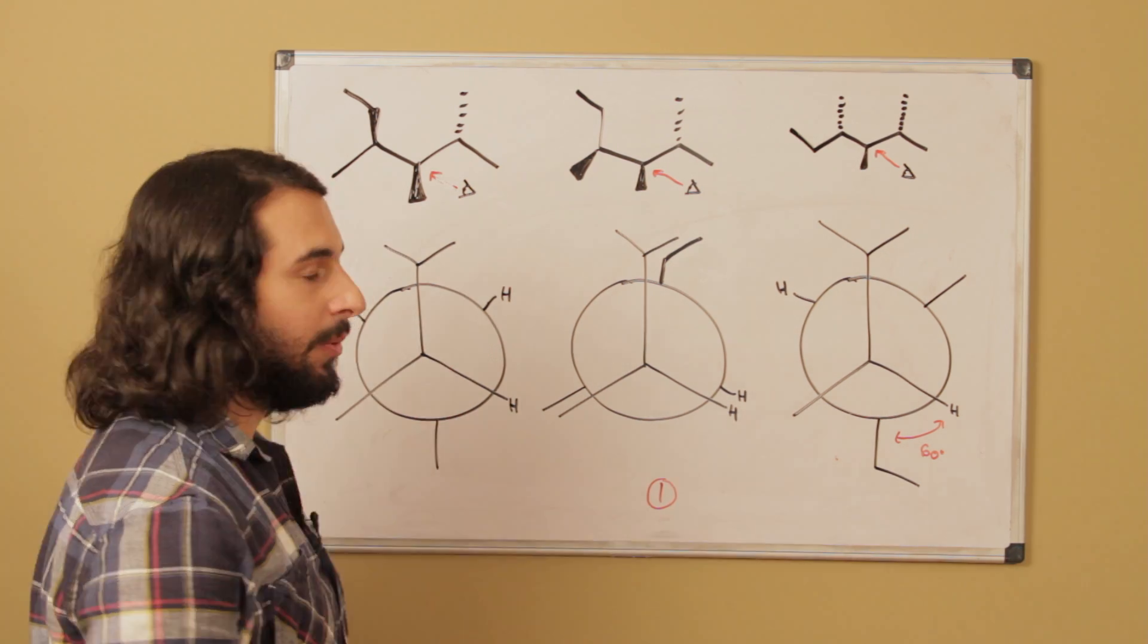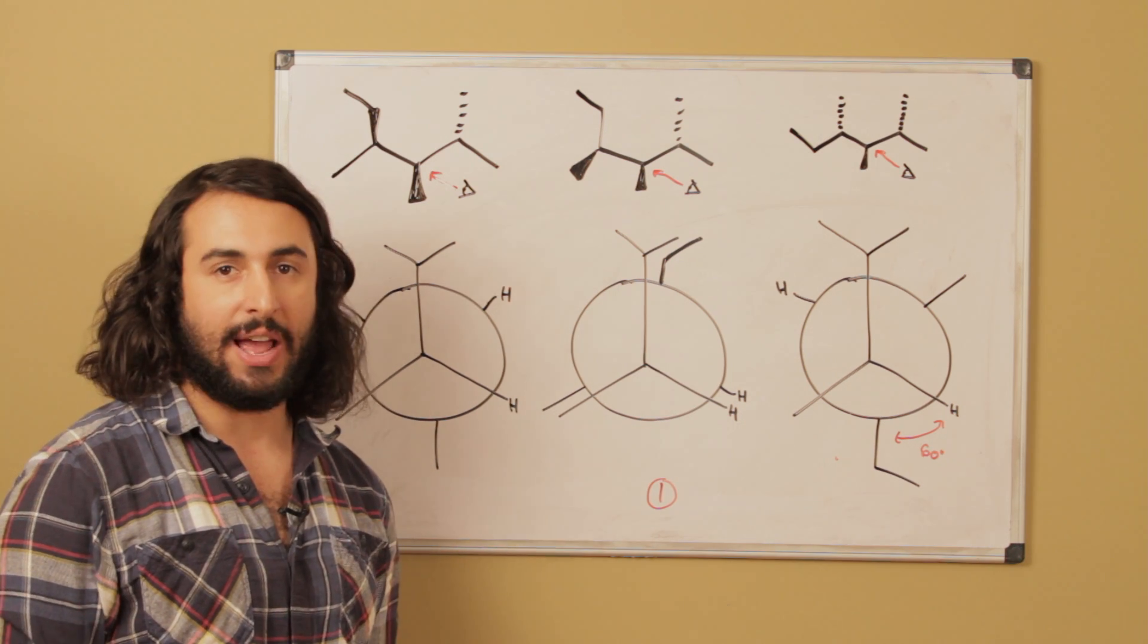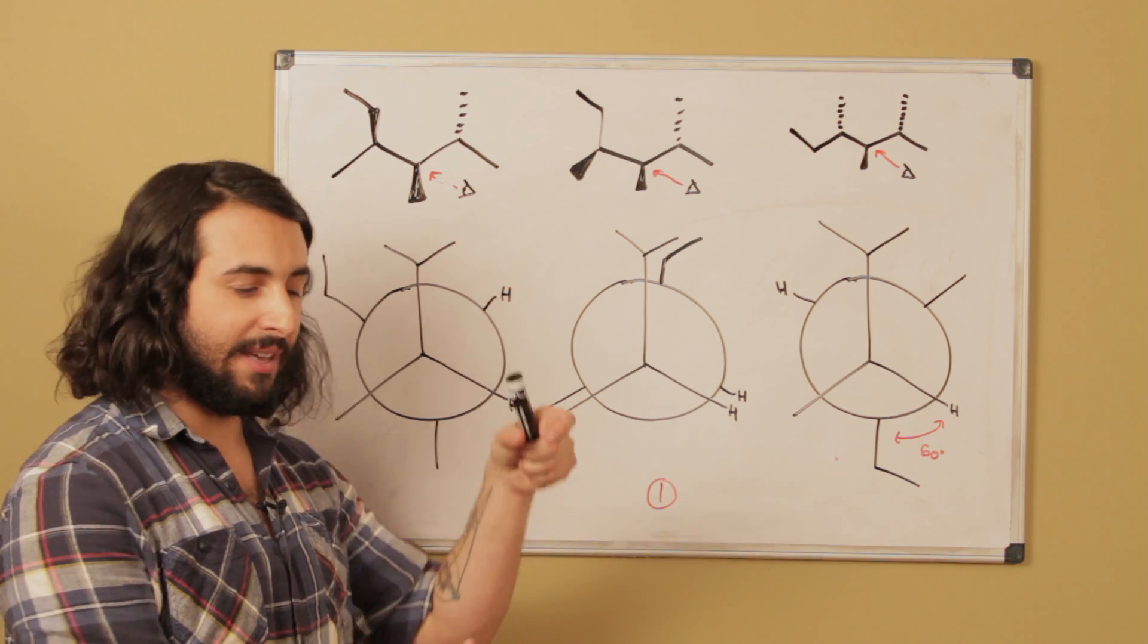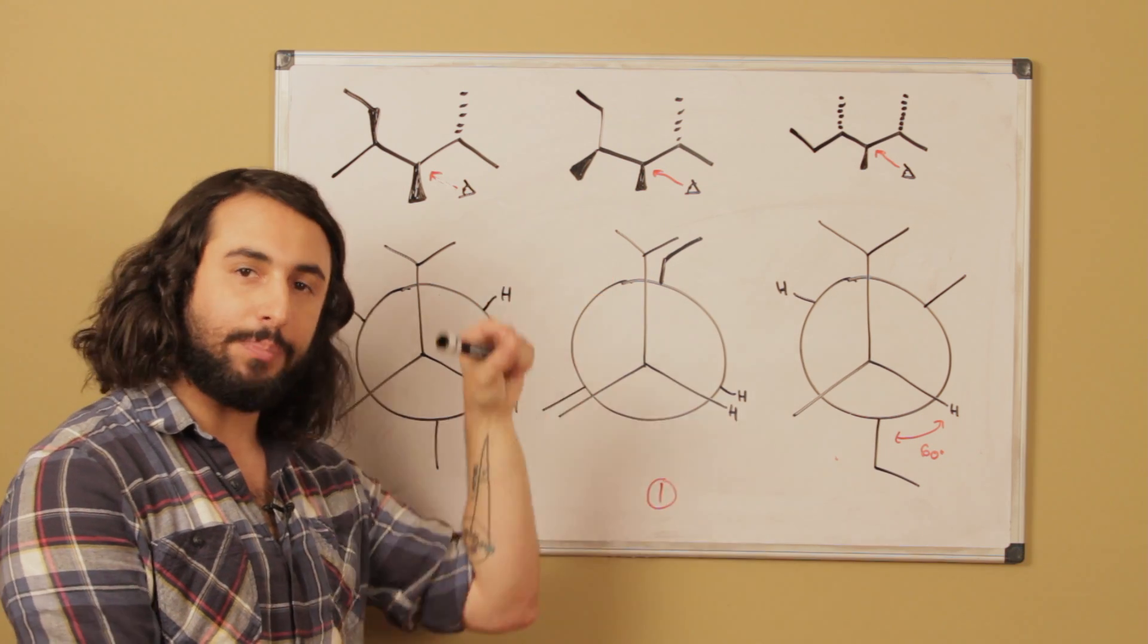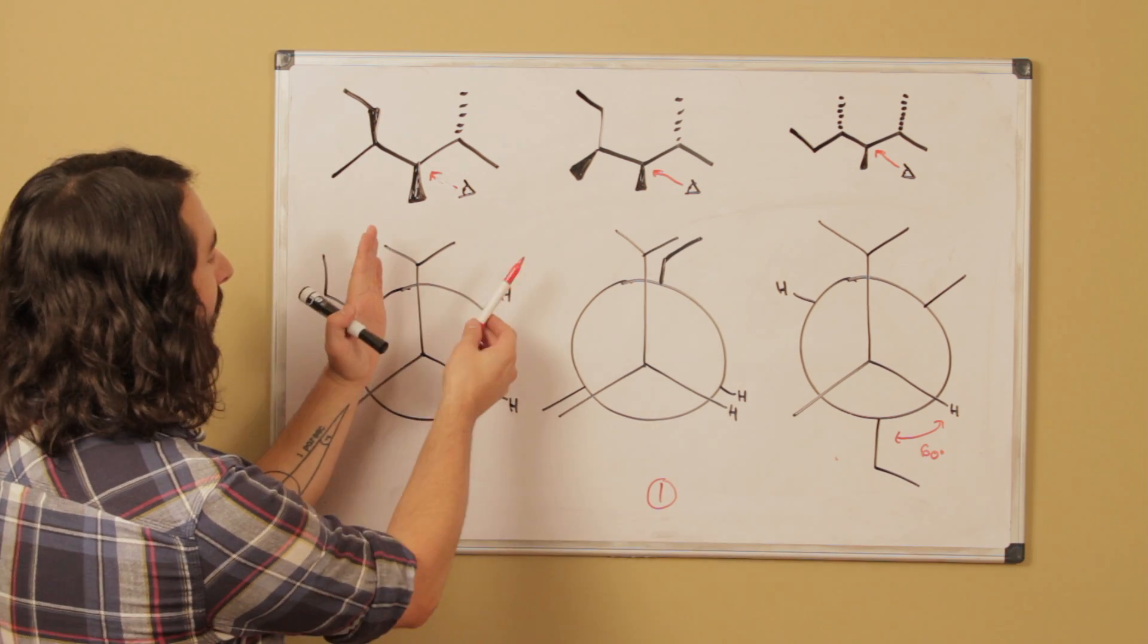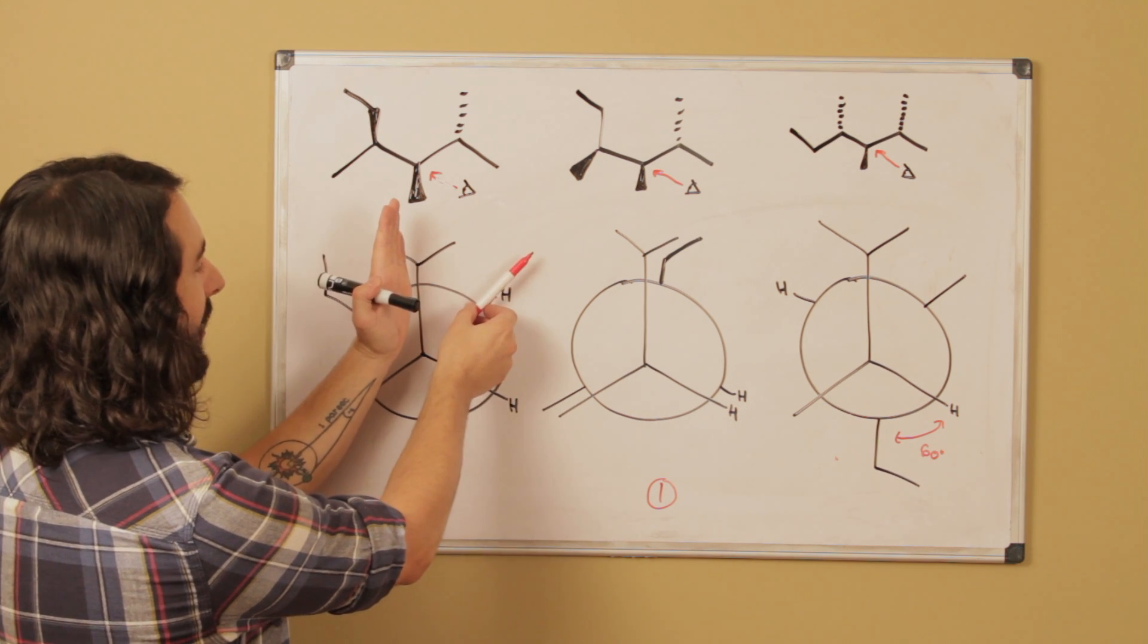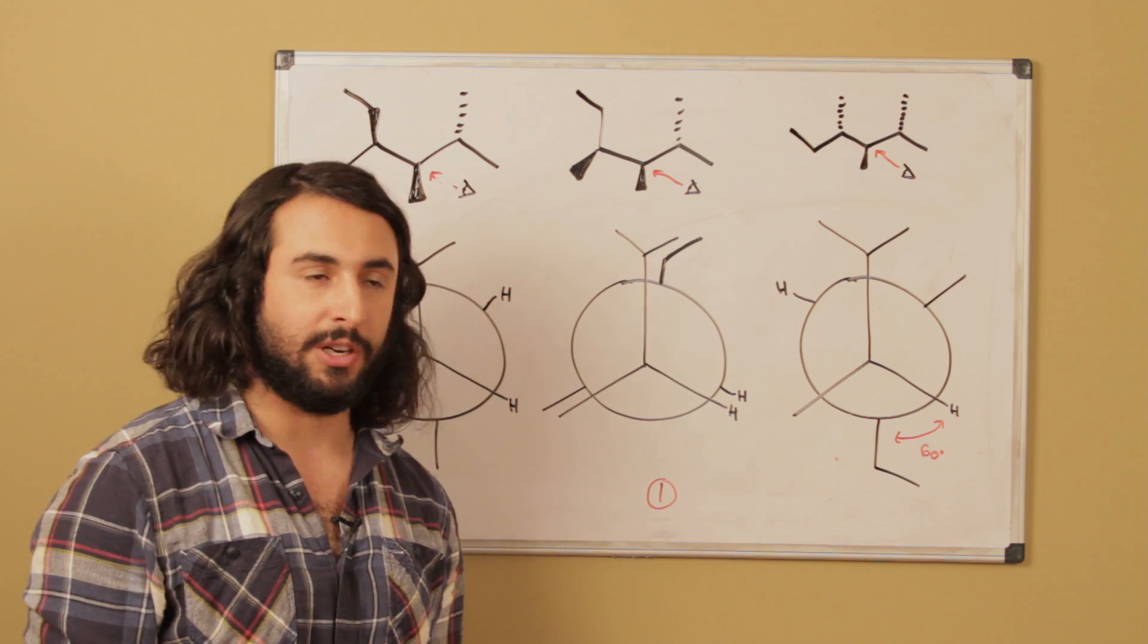Well, not only do we want them to be staggered, but we also want to minimize the gauche interactions, because when we have two bulky alkyl groups, the most favorable position for them to be in is anti to one another. That would be one on the top, one on the bottom, because that puts them as far away from each other as possible. That minimizes steric hindrance. But gauche is when it's staggered, but they are adjacent. So two positions, one on the front carbon, one on the back like that, with a 60 degree dihedral angle, those are said to be gauche to one another.